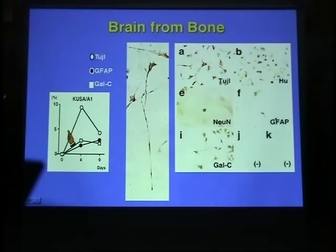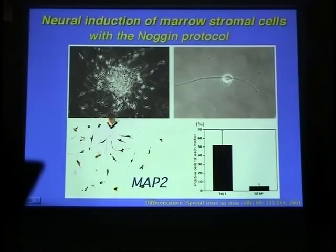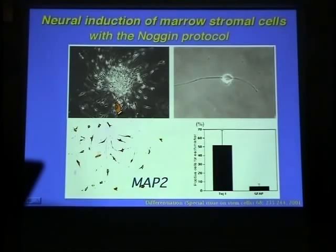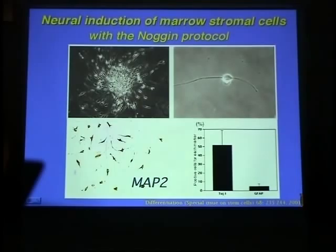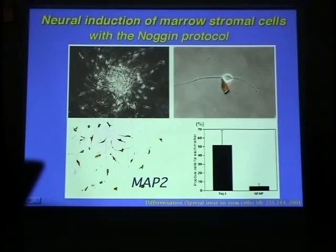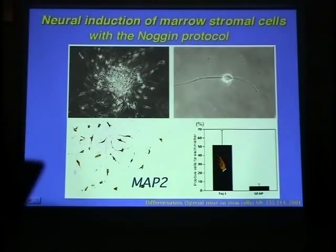We then treated the stroma cells with Noggin, an inhibitor of bone morphogenetic protein. This transdifferentiation was enhanced by Noggin compared to fibronectin. The differentiated cells displayed bright round cytoplasm, long processes, and terminal triangle tips. With this Noggin protocol, the percentage of TUJ1-positive cells increased to more than 50%.